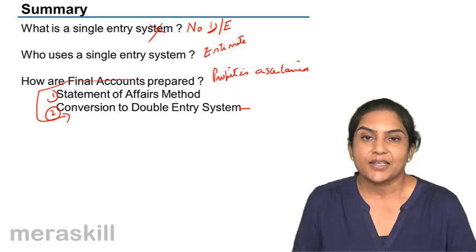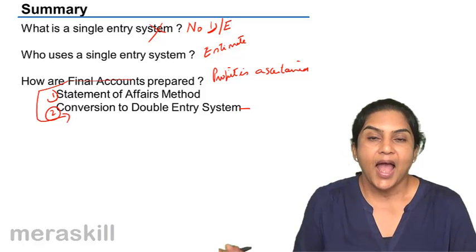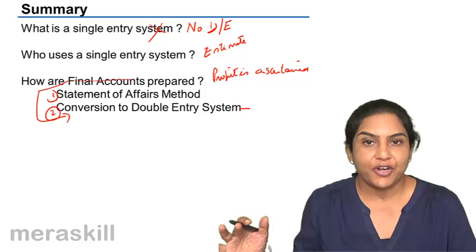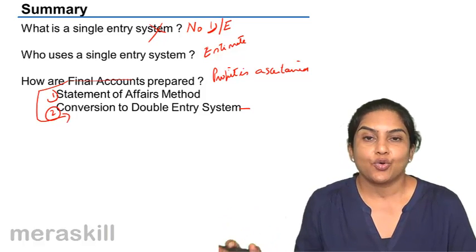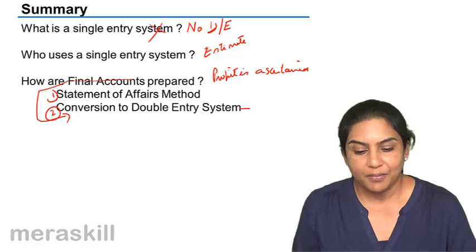Basically, we said under statement of affairs method, closing capital, add drawings, less fresh capital introduced, less opening capital will give us the profit for the period.